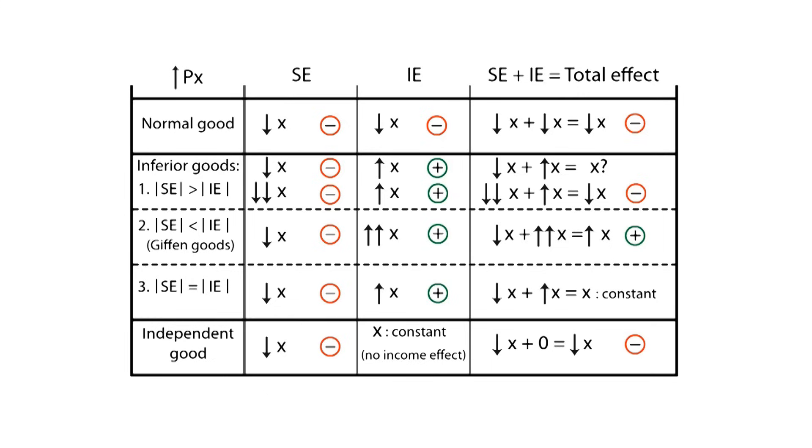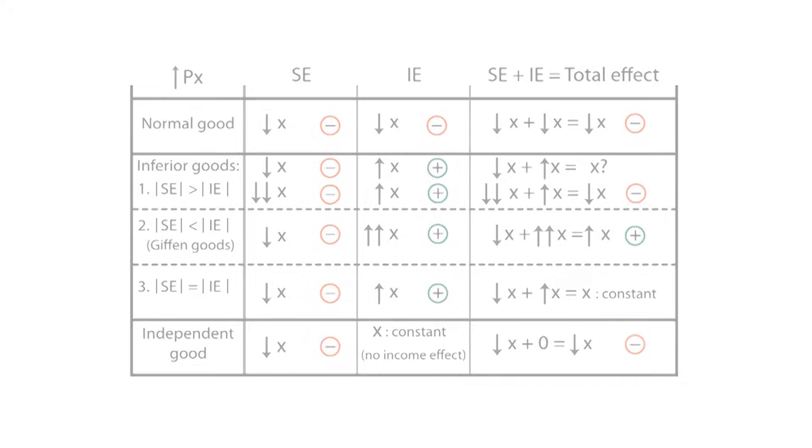On the one hand, being able to differentiate the substitution effect from the income effect can help us understand how consumers value different goods and how much of their income they are willing to spend on those goods. On the other hand, Marshallian and Hicksian demands can help us determine the exact amount of an increase or decrease in any consumer's welfare.